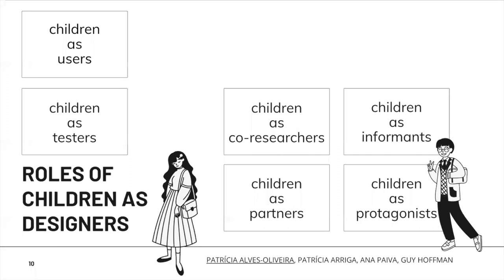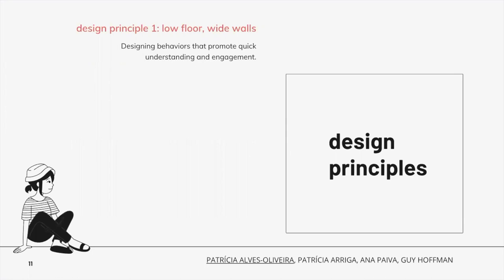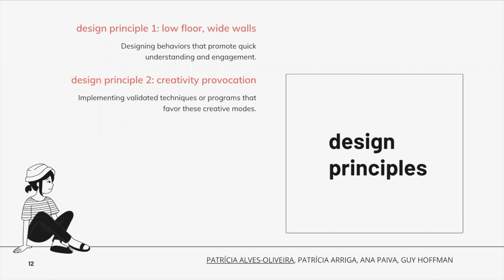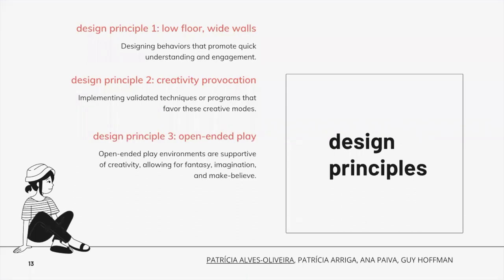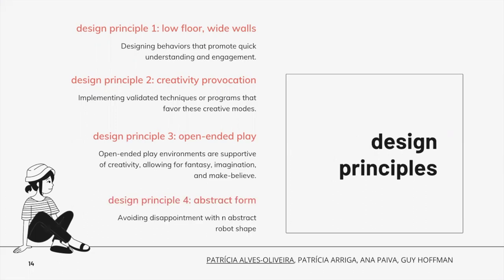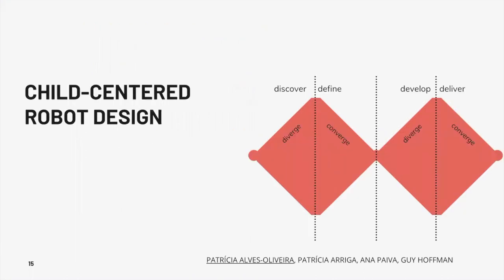Another important aspect was the role that children can have during the design process. The role of children in the design of robots is well reported in the literature and can go from being the users to co-researchers to protagonists. In our work, children were included with different roles depending on the design stage. We followed four design principles: a robot with low floor and wide walls, creativity provocations, open-ended play, and an abstract form. Our robot is non-humanoid.